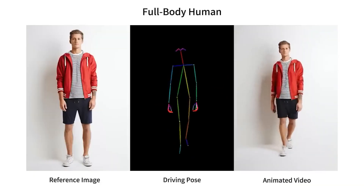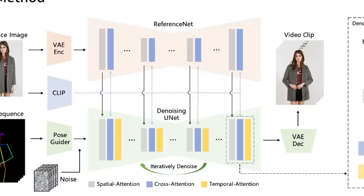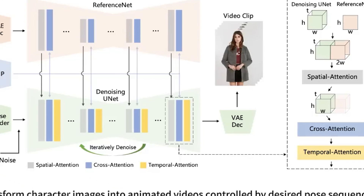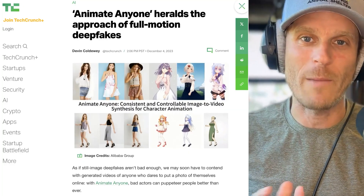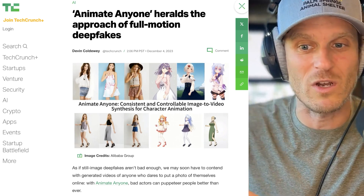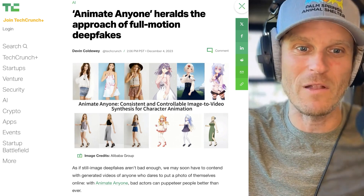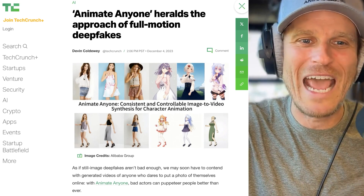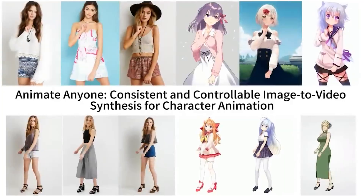A new white paper — a technical document — explains a new animation system where the results were so good it had people crying foul. A white paper is basically how new technology is often distributed. It's written by a bunch of scientists who have been doing research work to put some new tool into the world. Usually they release code along with it so you can verify it yourself. This is one of those cases where the white paper came out with promotional materials demonstrating the amazing capabilities of this new technology. It's called Animate Anyone.